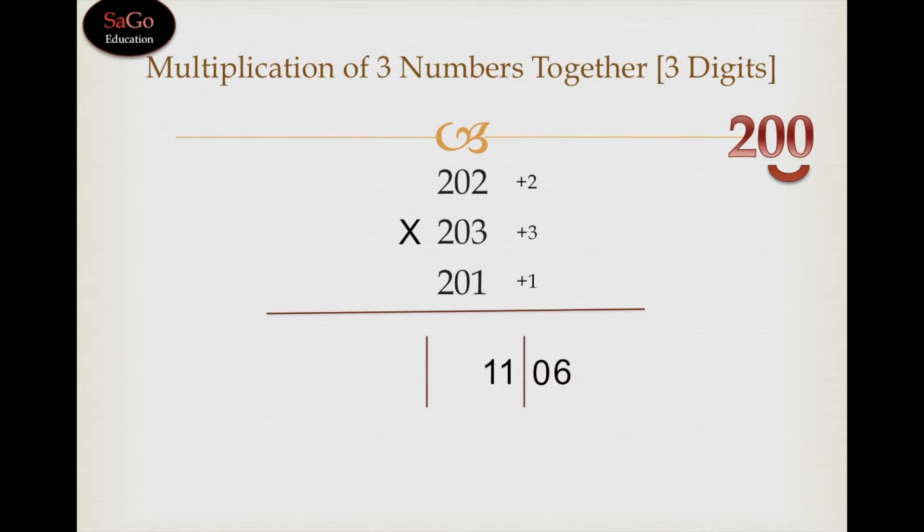Or you can take the last number which is 201. 201 plus 2 plus 3 will make 206. Write down 206. So you can pick any number, leave the front digit, and add the other two digits. The result will be the same.